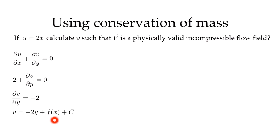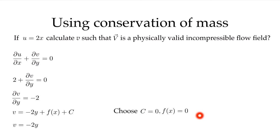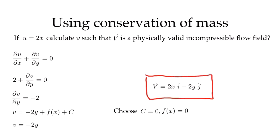Solving for ∂v/∂y gives −2, and integrating with respect to y could yield an arbitrary function only of x plus an arbitrary constant — when you take the derivative of either with respect to y, they vanish. So we have a whole family of velocities satisfying this constraint. I'll choose the simplest: the constant is zero and the function of x is zero, giving v = −2y. This velocity field satisfies conservation of mass and is therefore a physically valid incompressible two-dimensional flow field.